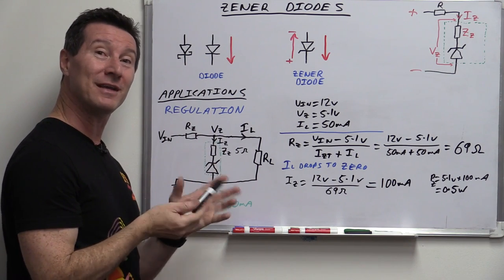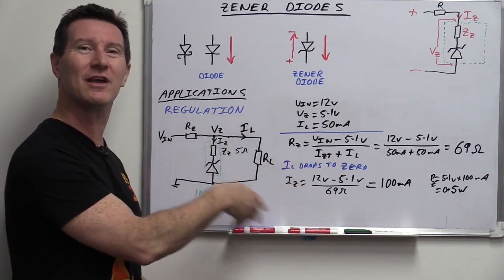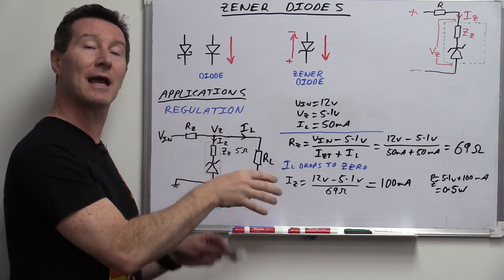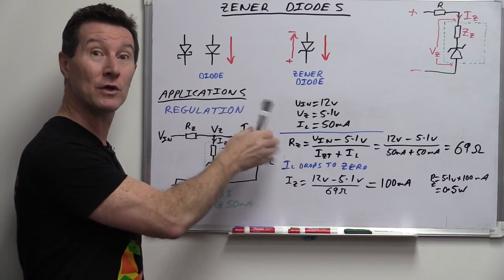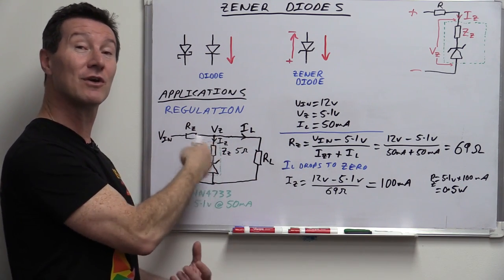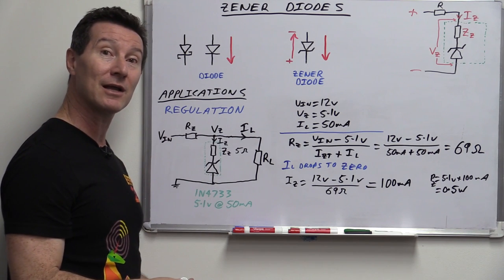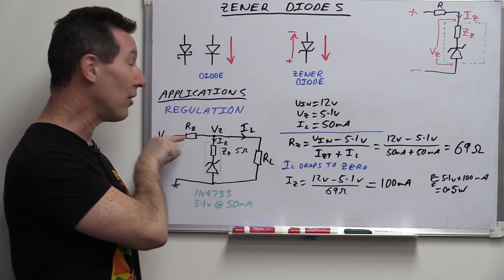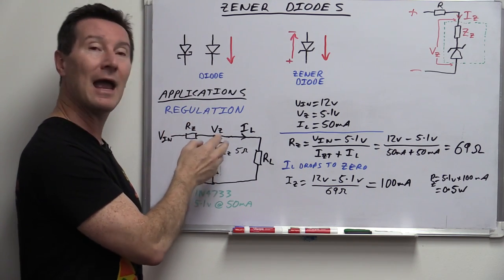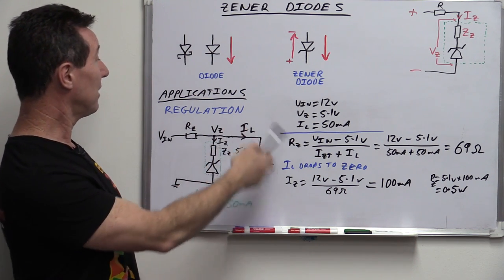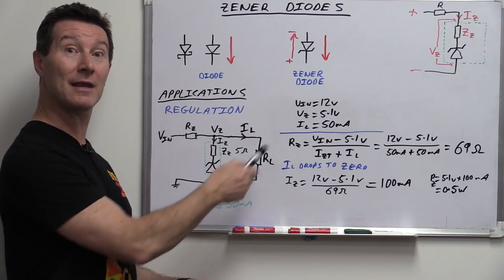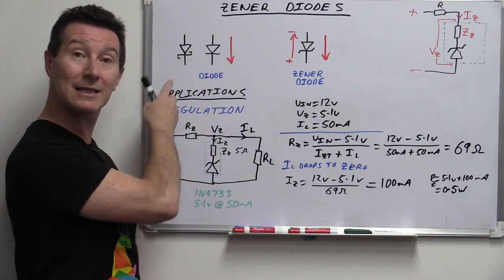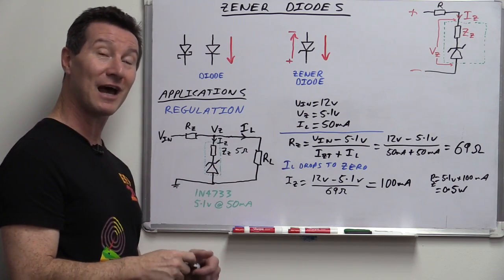You can see how it gets complicated when the load changes all the time and the input voltage changes. You have to rejig all the calculations and find a compromise value for your Zener dropper resistor. As a voltage regulator for powering a circuit, Zeners are okay if you don't care about efficiency. They're more useful in niche applications within bigger circuits — reference voltages and things like that. This is why in reference circuits, you'll often find the Zener powered from a constant current source, which makes everything much simpler.